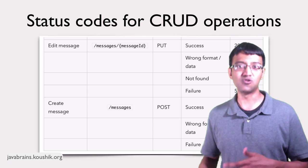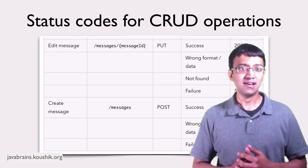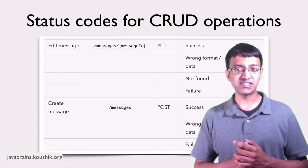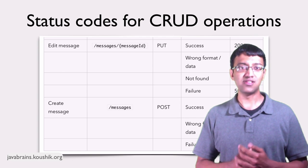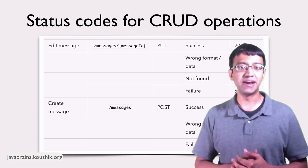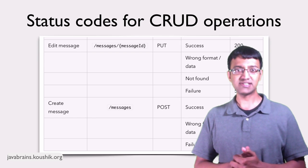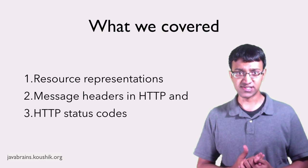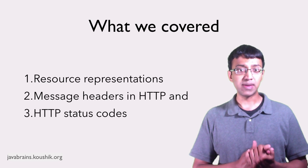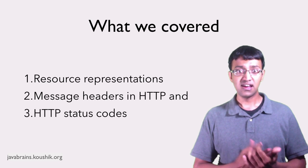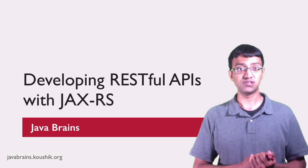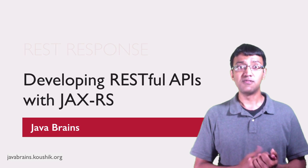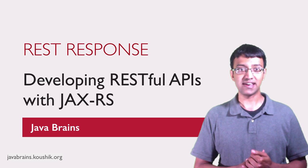Responses for other resources would mostly follow the same pattern. Again, this is a small subset of the HTTP status codes and we'll look at some more when we start implementing the APIs. To summarize, in this tutorial, we learned about resource representations. We learned about HTTP message headers and we learned about HTTP status codes. These are things you have to keep in mind when you're developing your REST API. Thanks for watching.